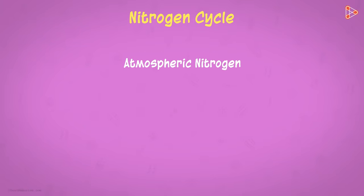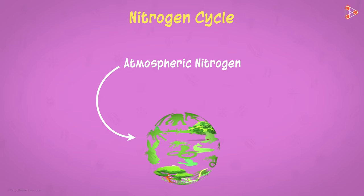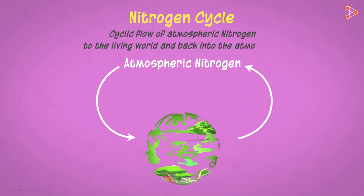The nitrogen in the atmosphere is brought into the biological world where it is utilized. But it is also sent back to the atmosphere by some means. This process of cyclic flow of nitrogen from the atmosphere to the living world and back into the atmosphere is called as the nitrogen cycle.